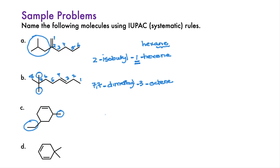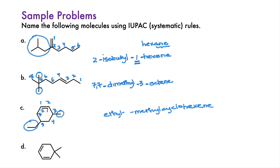The next example is a cyclohexene with ethyl and methyl substituents. The ethyl is first in alphabetical order, so this is an ethyl-methyl-cyclohexene. Leave spaces for numbering the substituents. The double bond must be in position 1 and 2, so there is no need to number it. Number in both directions and choose the scheme giving the substituents the lowest number at the first point of difference.